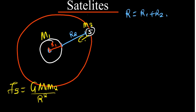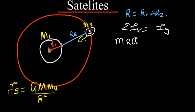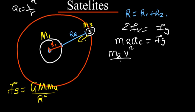The sum of forces on the satellite in the direction of motion gives us only Fg. According to Newton's second law, force equals mass times acceleration. Since the satellite moves in a circle, the acceleration is the centripetal acceleration. So we have M2 times the centripetal acceleration equal to Fg.